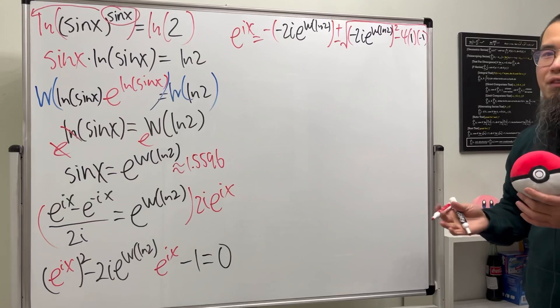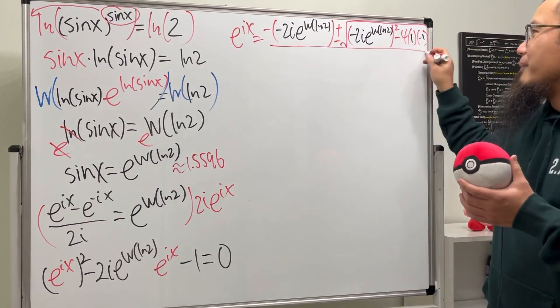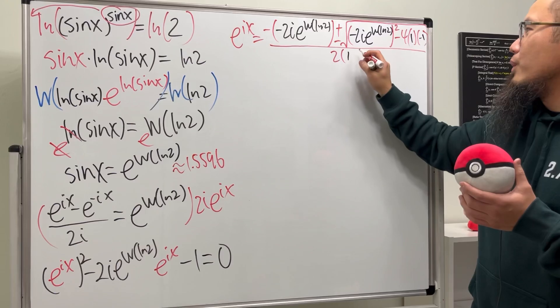Okay, finally, I fit everything right here. And all over, 2 times a, which is 1. All right.